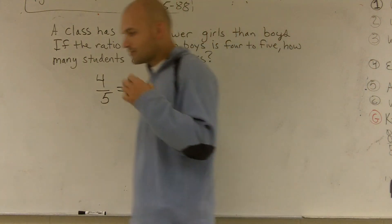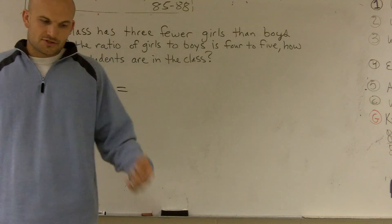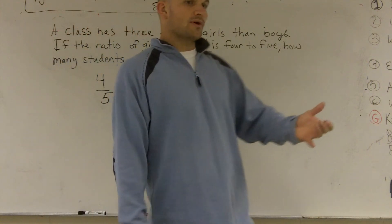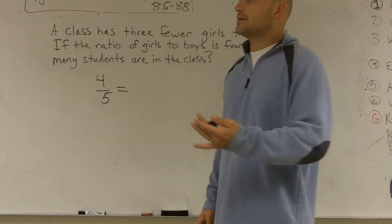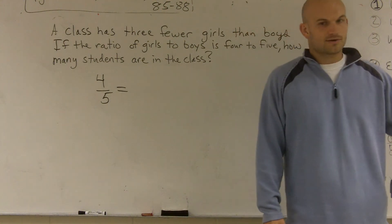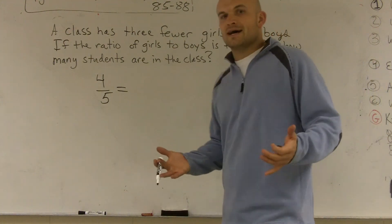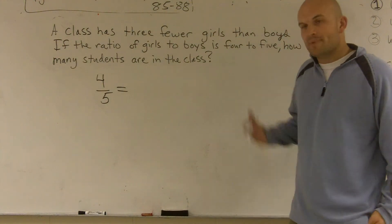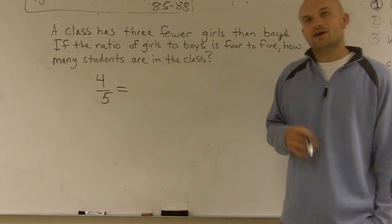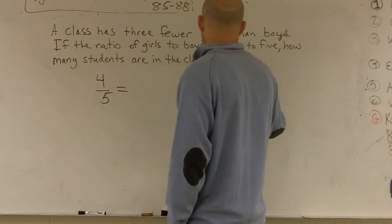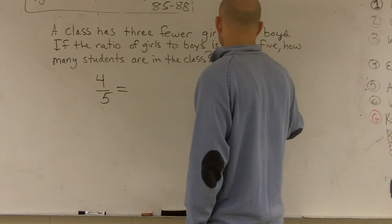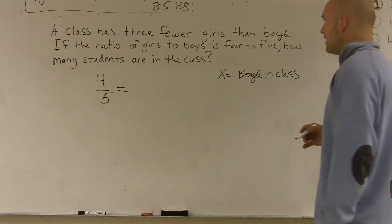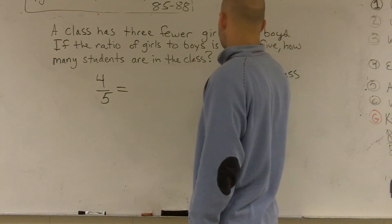Now, if I think about this, three fewer girls than boys. So that means if there's 10 boys, three fewer would mean 7 girls. If there's 20 boys, three fewer would be 17 girls. So it's all going to depend on how many boys are in our class. And again, we don't know how many boys are in our class. So the best thing we can do is use a variable for boys. So I'm going to write it over to the side, x equals boys in the class. All right? Then the girls are going to be x minus 3.